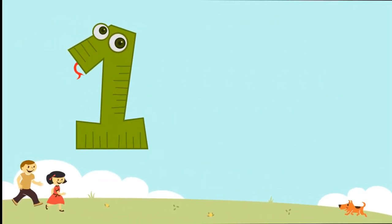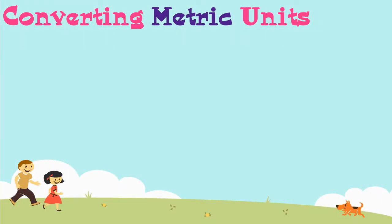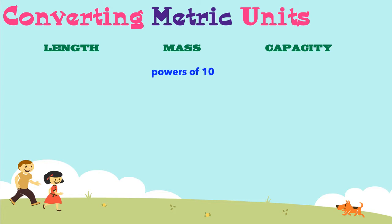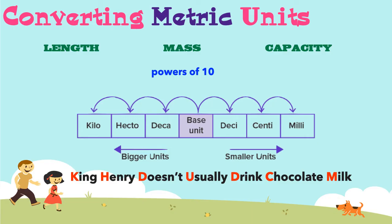Let's look at the King Henry Doesn't Usually Drink Chocolate Milk method for converting metric units. When using this method for converting length, mass, and capacity, it is very easy. Because the metric units are made up on principles of powers of 10, instead of multiplying or dividing by a bunch of crazy numbers, we only have to move decimals to the left or right and sometimes add a few zeros.